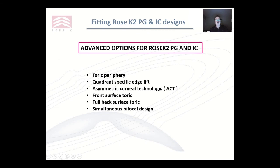Without going into this in detail, just to remind you that you do have advanced options for both PG and IC: toric periphery, quadrant-specific edge lifts where you can dial up a different edge lift in each quadrant, ACT where you tuck in or tuck out any edge of the lens in two quadrants — typically with a corneal lens you want to tuck in the bottom — front surface toric, back toric, and there is a bifocal design available in both IC and PG.